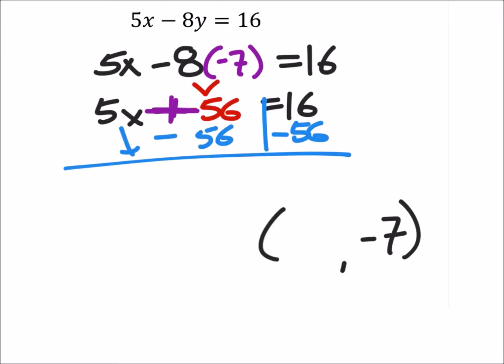And we got 5x equals negative 40. So to solve for x, we'll divide both sides by 5, and we get x equals negative 8.